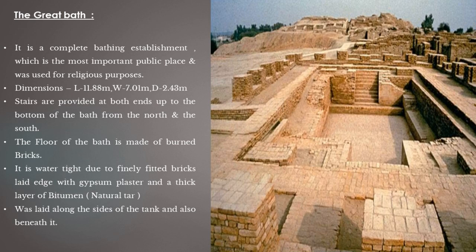Now talking about the Great Bath, a complete bathing establishment and the most important public space, used for religious purposes. Its dimensions were 11.88 meters in length, 7.01 meters in width, and 2.43 meters in depth. Stairs were provided at both the north and south ends leading to the bottom of the bath. The floor was made of burnt bricks, and it was watertight due to finely fitted bricks laid with gypsum plaster and a thick layer of bitumen — natural tar — laid along the sides and beneath the tank as well.